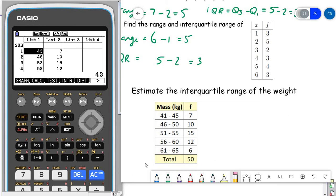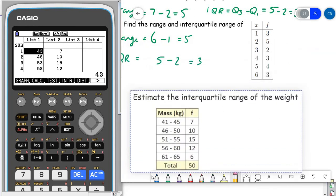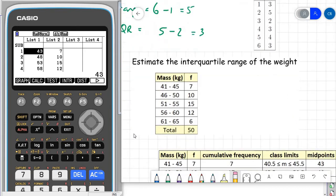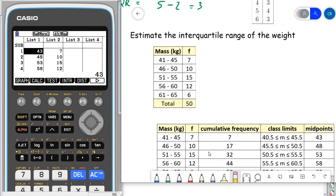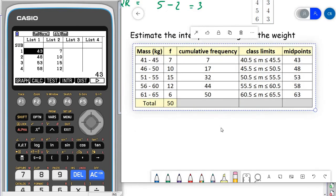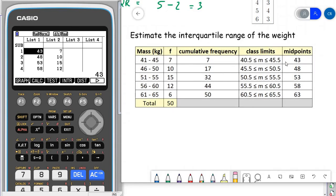So what we do is we represent each group with its midpoint when we're using the calculator. So I've worked out the midpoints and a few other things, and I've typed these midpoints into my data list on my calculator and I've typed in the frequencies as well.